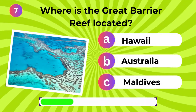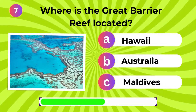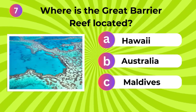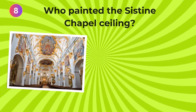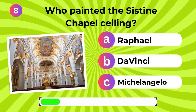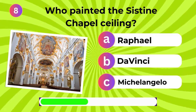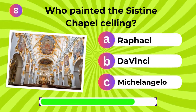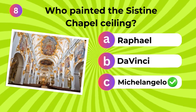Where is the Great Barrier Reef located? Australia. Who painted the Sistine Chapel ceiling? Michelangelo.